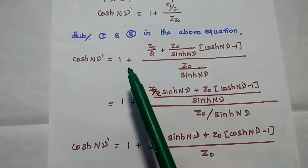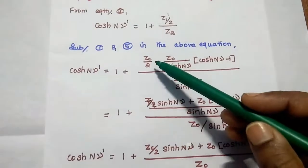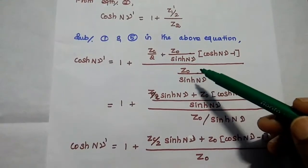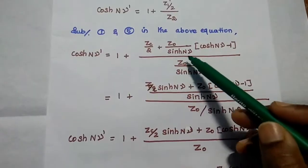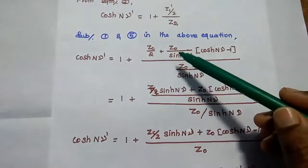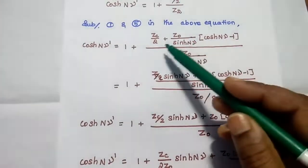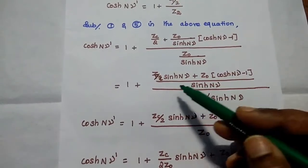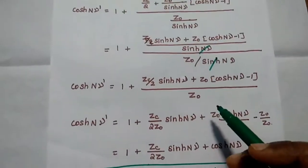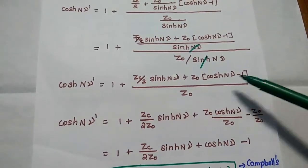So, cosh(Nγ dash) is equal to 1 plus Z1 dash by 2 replaced by the fifth equation — that is ZC by 2 plus Z0 by sinh(Nγ) multiplied by (cosh(Nγ) minus 1) — all divided by Z2, which from the first equation is Z0 by sinh(Nγ). Simplifying by dividing the two denominators, we get 1 plus ZC by 2 multiplied by sinh(Nγ) plus Z0 multiplied by (cosh(Nγ) minus 1), all divided by Z0.